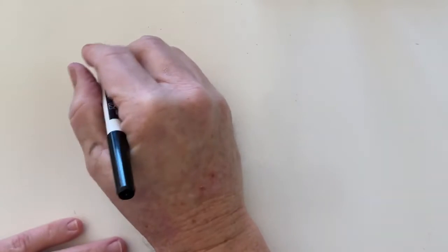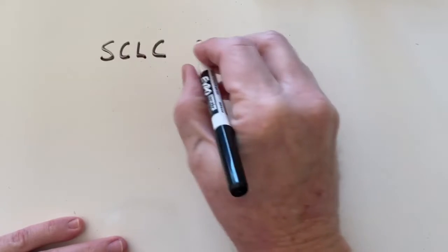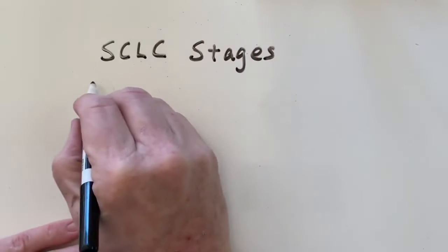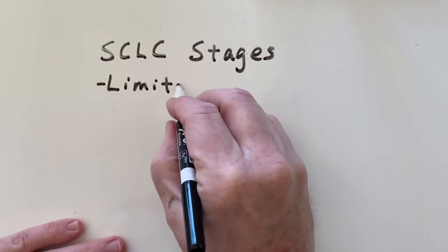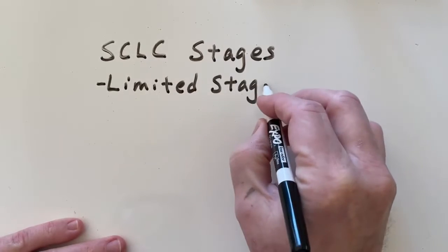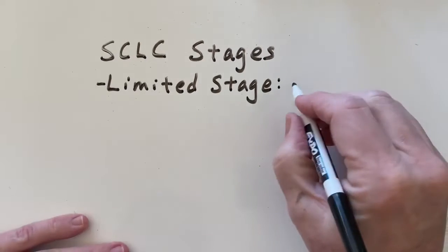Small cell lung carcinoma is staged differently than non-small cell carcinoma. The stages are a little easier. In the limited stage, the cancer is just found in the lung and the lymph nodes in the lung.